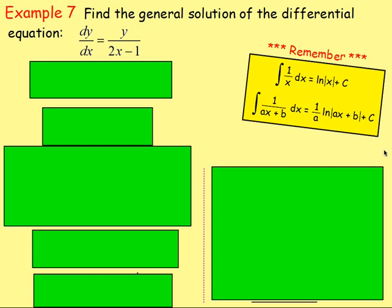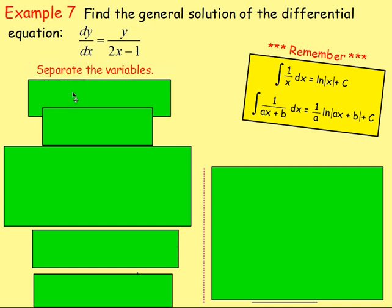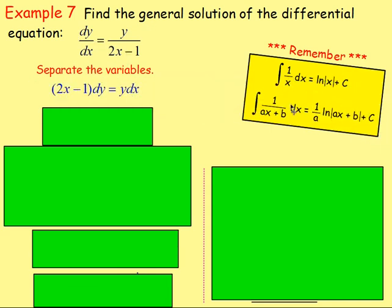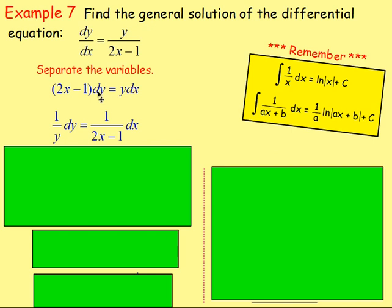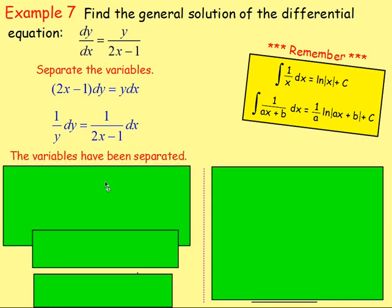Example 7: find the general solution of this differential equation, dy/dx equals y over (2x minus 1). The first thing you need to do is separate the variables. So separating the variables, let's cross multiply. If you cross multiply, you will end up with (2x minus 1) dy equals y dx. Divide both sides by y, divide both sides by (2x minus 1), and we will end up with 1 over y dy equals 1 over (2x minus 1) dx. The variables have been separated.